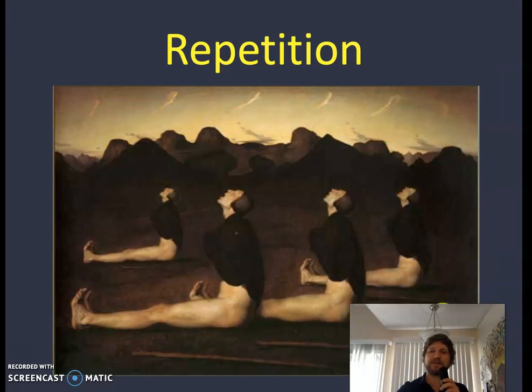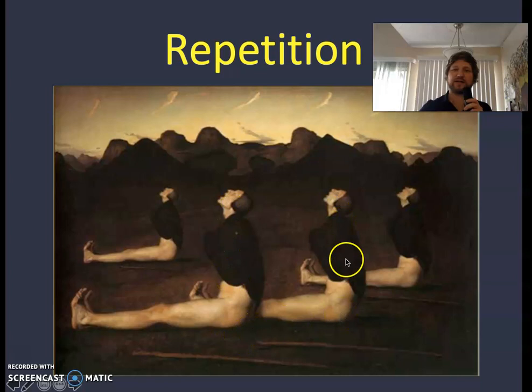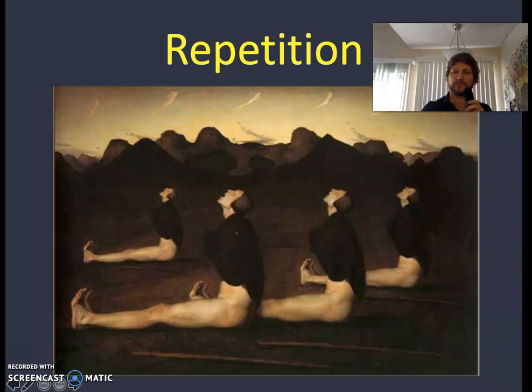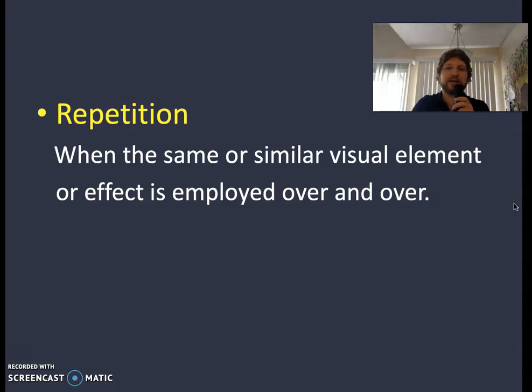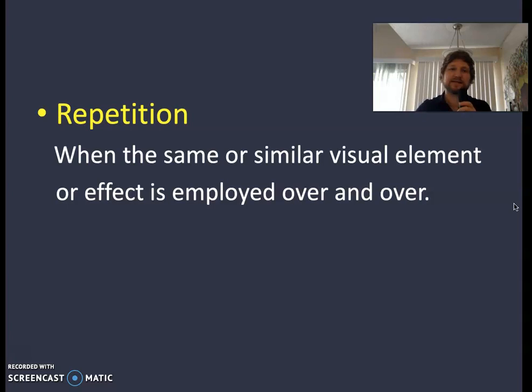Repetition. This is a painting by Odd Nerdrum with the same figure over and over again making an L-shape. You see the same clouds repeating, the sticks on the ground repeating. When the same or similar visual element or effect is employed again and again, it's connected to rhythm. If everything in a picture is totally separate, it becomes chaotic, but if we have the same thing happening again and again, we can catch on to it.